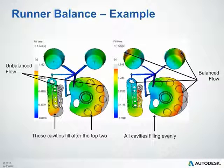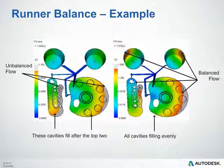This is a good example of how the runner balance analysis can help balance a family tool. In this case, we have several components that vary quite a bit in their part volume. In the image on the left, you can see it's clearly unbalanced flow — the bottom two cavities have a much larger volume, so they're filling quite a bit later than the top two cavities. On the right, after running the runner balance analysis, you can see all four cavities are filling in a similar manner, within 5%.